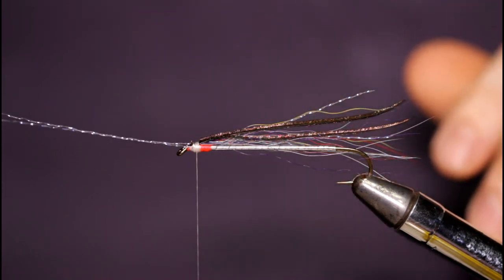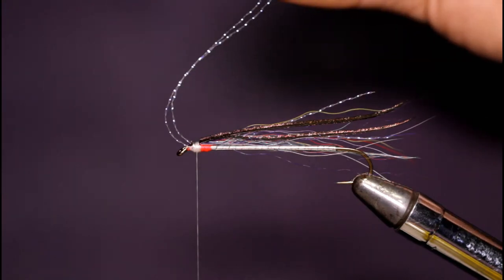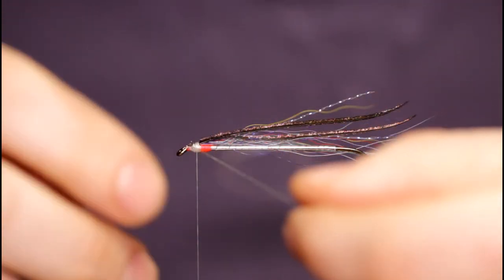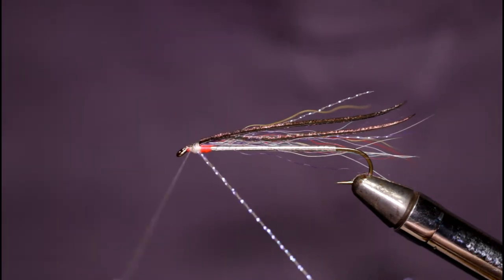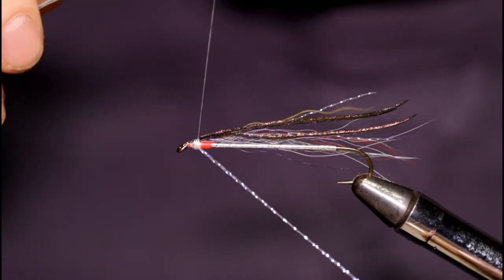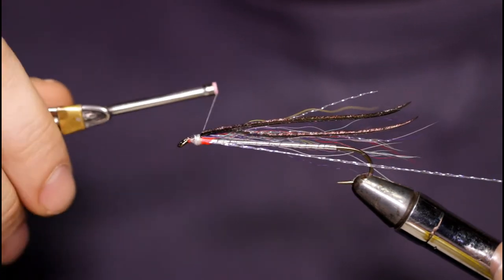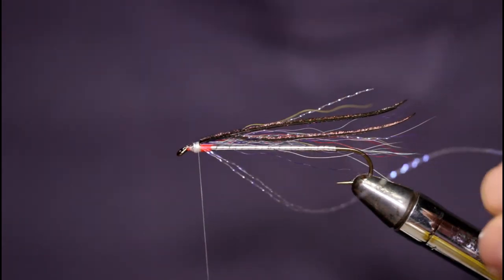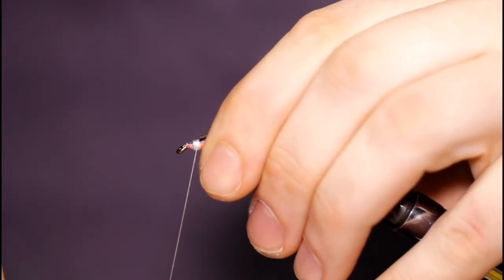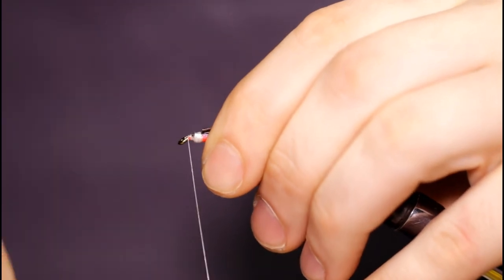Now you could come in with your scissors and snip this off, or I'll show you a little trick here to save some time. You can just take these two strands, pull them off to the opposite side and take some turns to secure the material, just kind of working it to the position you want it as you go. Come in with the scissors now, trim it to length, and there you have a speedy way of tying in four strands of crystal flash.